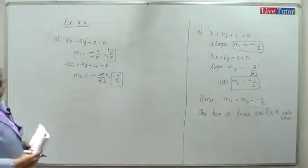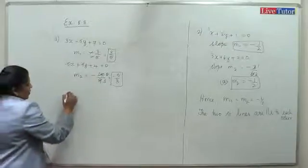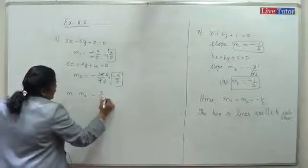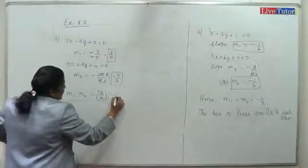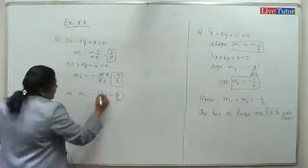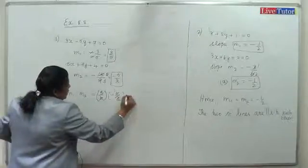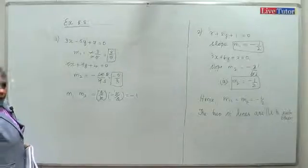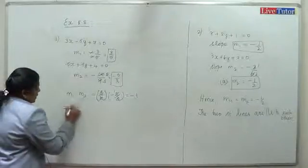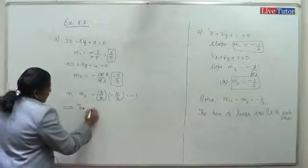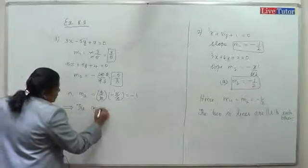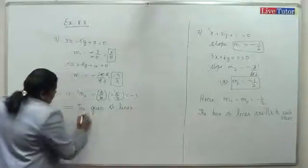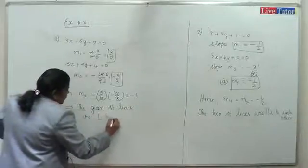M1 times M2 equals (3/5) times (-5/3). The 5s cancel and the 3s cancel, leaving minus 1. Since M1 × M2 equals -1, the two given straight lines are perpendicular to each other.